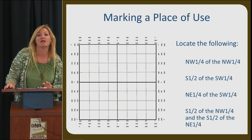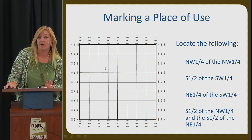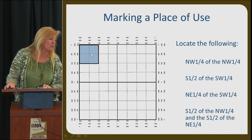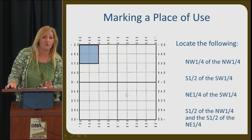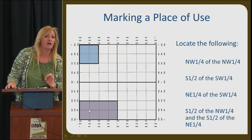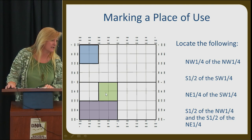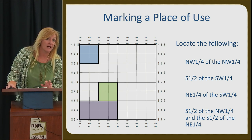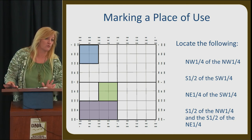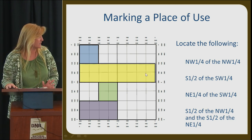Marking a place of use works similarly. If you want the northwest of the northwest, find the northwest quadrant, then identify the northwest of the northwest. For the south half of the southwest, find the southwest quadrant — it's going to be both the southeast and southwest of the southwest quarter. You can also combine: the south half of the northwest and south half of the northeast, which gives you a larger place of use across your application if your ranch covers more area.